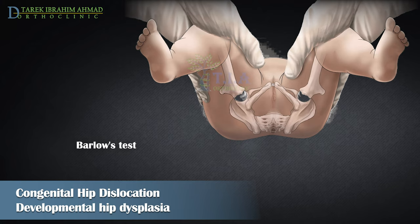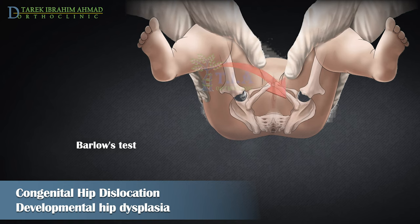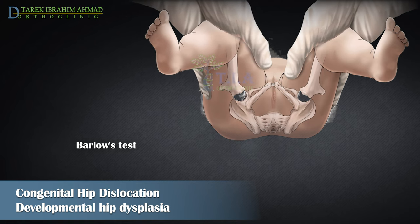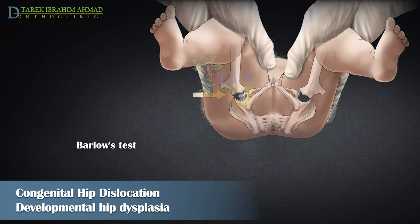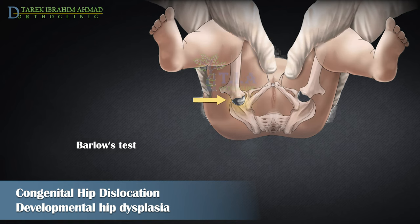With the child in dorsal decubitus, the thigh is kept at right angles to the trunk in a position of adduction. In Barlow's test, the upper part of the femur is kept between the index and middle fingers above the greater trochanter, and the thumb is kept in the inguinal region. Force is exerted by the child's knee vertically to the hip in an effort to dislocate the femoral head from inside the acetabulum.